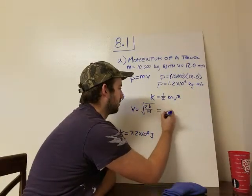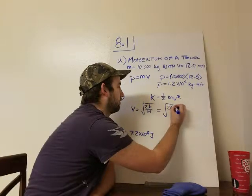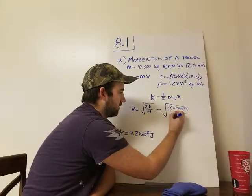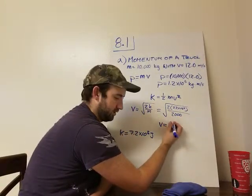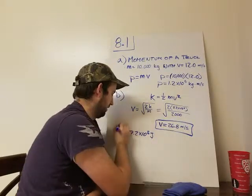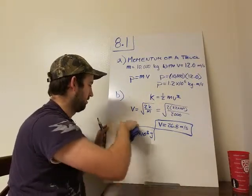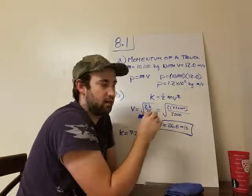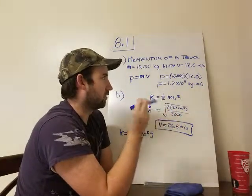So that will equal the square root of two times the kinetic energy, which is 7.2 times 10 to the fifth, over the mass, which we know is 2,000. Remember, that's the mass of the SUV. So when we plug that in, we end up getting the velocity equals 26.8 meters per second. Don't need to circle that since that's just the kinetic energy of the truck. So the SUV is going to need to go 26.8 meters per second in order to have the same kinetic energy as the truck going 12 meters per second.